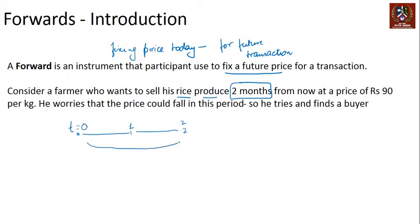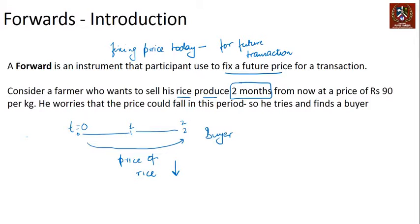Between now and two months, what will happen to the price of rice is not known. The farmer's worry is that the price will fall, so he tries to find a buyer who needs rice after two months. Think about it: the farmer believes the price can fall, which is a problem because he'd sell at a lower price. The buyer's worry is the opposite — the buyer worries that the price might go up.